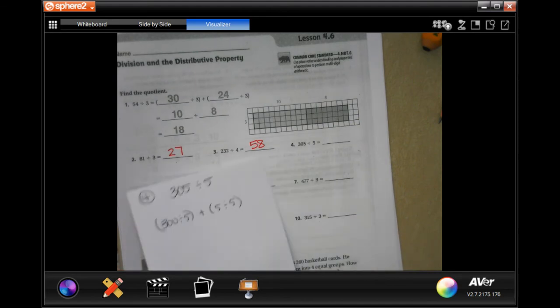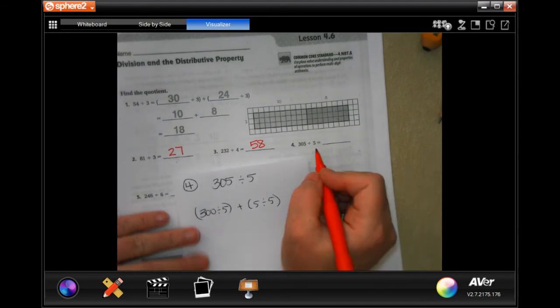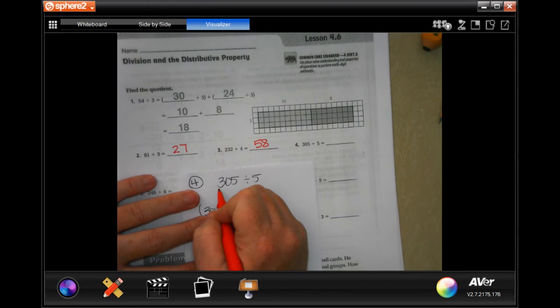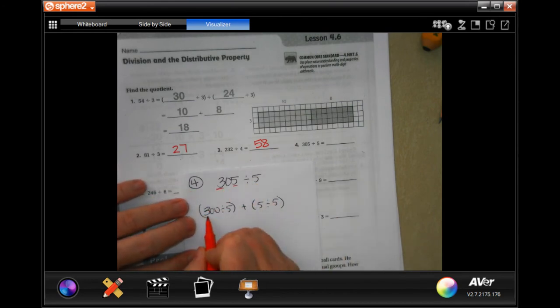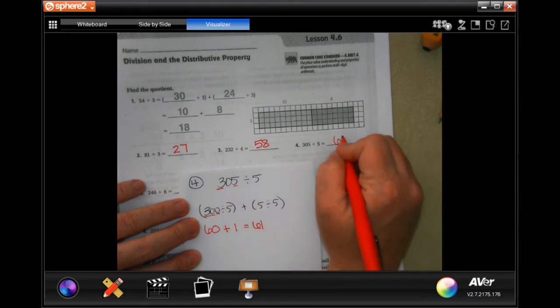So 305 divided by five. Well, there's 300, and then there's five. So five goes into 30, six times, add that zero on, and five goes into five once, 61.